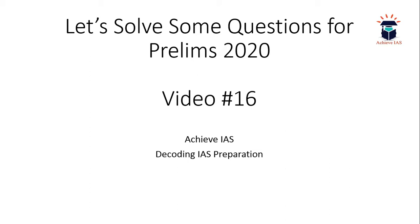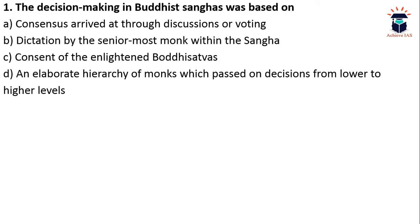Today's topic of questions is Ancient India. The first question is: the decision-making in Buddhist Sanghas was based on — A) consensus arrived at through discussions or voting, B) dictation by the senior-most monk within the Sangha, C) consent of the enlightened Bodhisattvas, D) an elaborate hierarchy of monks. The Buddhist Sanghas were basically places where monks and nuns resided, and here decisions were arrived at through discussions as well as voting.